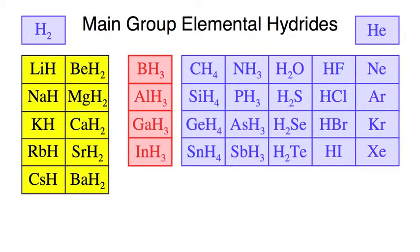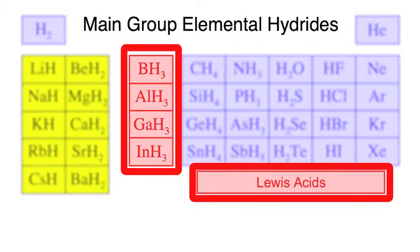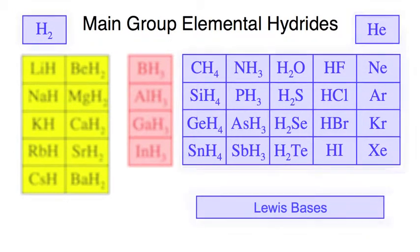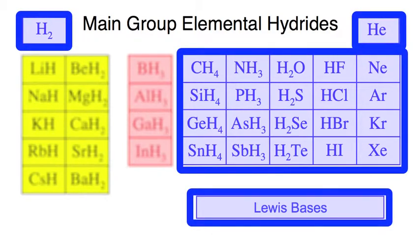If we analyze the main group elemental hydrides in terms of Lewis acids and Lewis bases, we find a strip down the middle as Lewis acids. In the Chemogenesis analysis, Lewis acids are colored red — these are species such as boron hydride and aluminium hydride. To the right, we find a large group of Lewis bases, which are species that complex with Lewis acids. Lewis bases are colored blue, and we also find hydrogen H2 as a Lewis base.